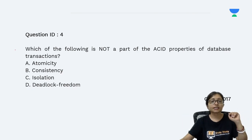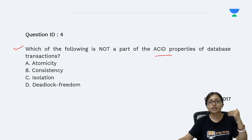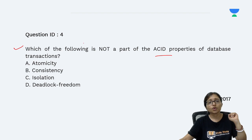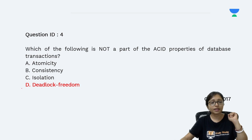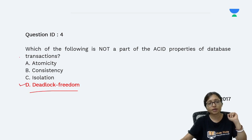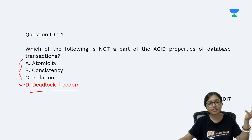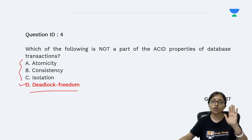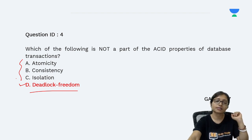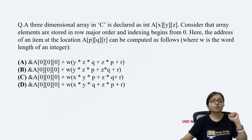Another question was about ACID properties — it is also a previous GATE question. The question asked which of the following is NOT part of ACID property. The answer is deadlock freedom, because atomicity, consistency, isolation, and durability are the ACID properties. Deadlock freedom is not among them, so deadlock is the correct answer.